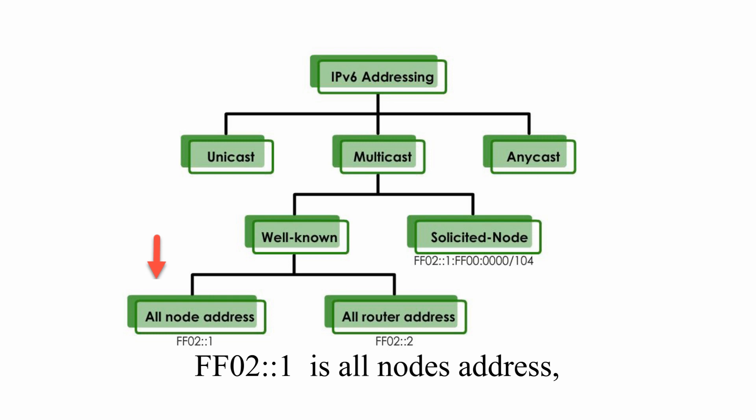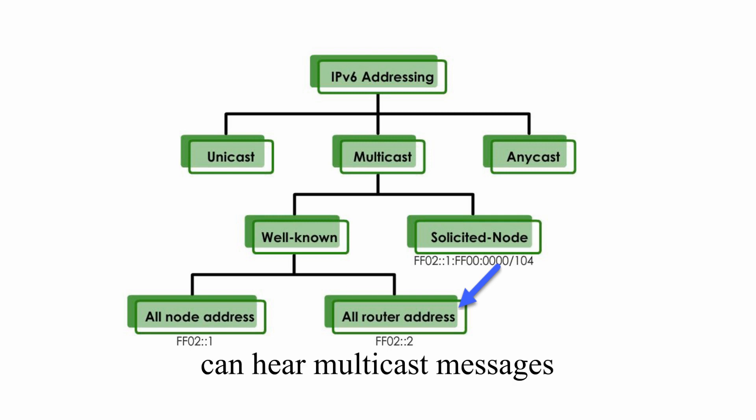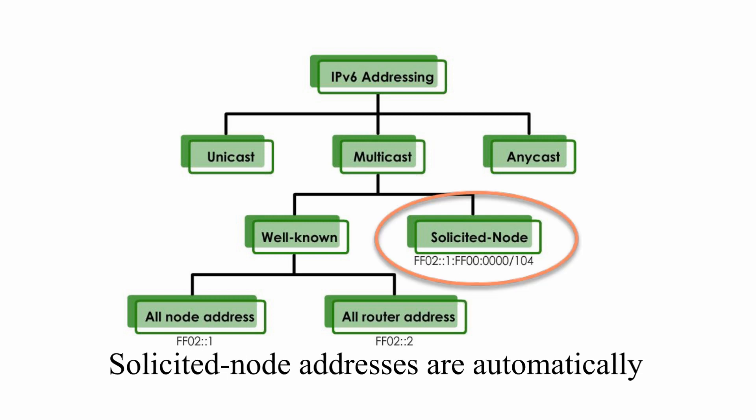ff02::1 is the all-nodes address, which means all nodes identified by this address on the local network can receive the messages. ff02::2 is the all-routers address, which means all routers on the local network segment can hear multicast messages with this address as the destination.